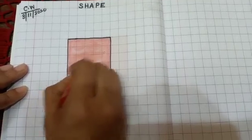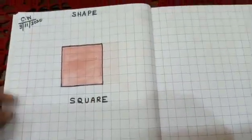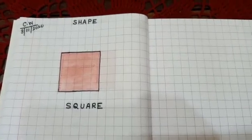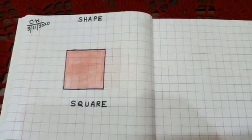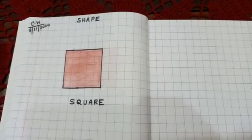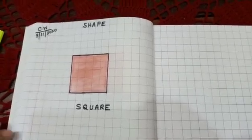So my color is complete. So again I am saying square has four sides and four corners. Okay children, start practicing at home. Bye bye.